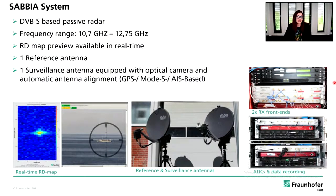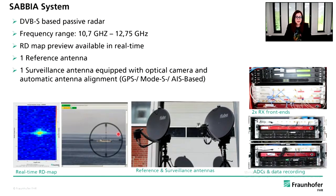To acquire signals from the DVB-S system, we developed the so-called SABIA system, working in the Ku frequency band. As seen in the picture on the left, a range-Doppler map is available in real time during acquisition. The system is constructed from two identical parabolic antennas: one reference antenna pointing to the geostationary satellite illuminating the scene, and one surveillance antenna tracking the target of interest, equipped with an optical camera and automatic antenna alignment. The system also includes two identical receiver front ends, a high-speed ADC, and data recording.